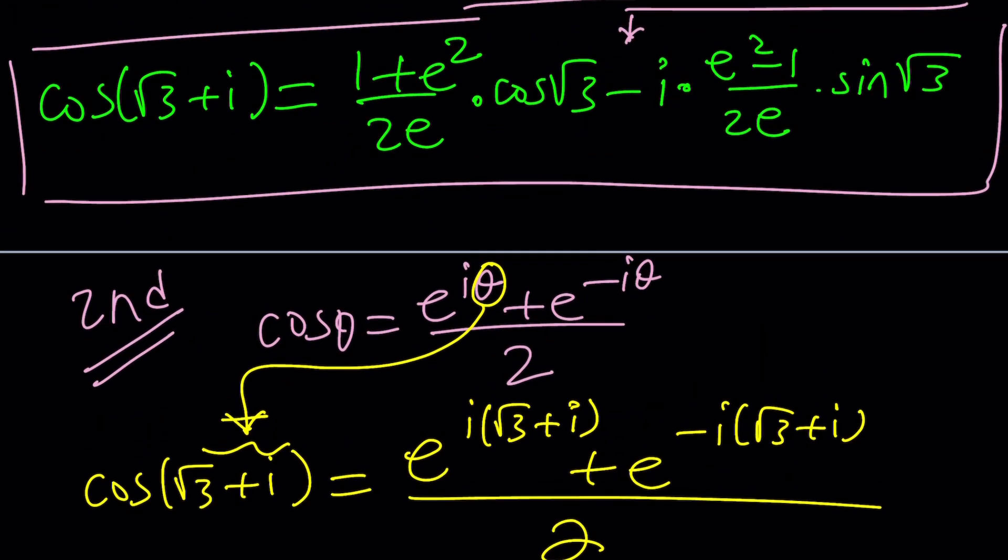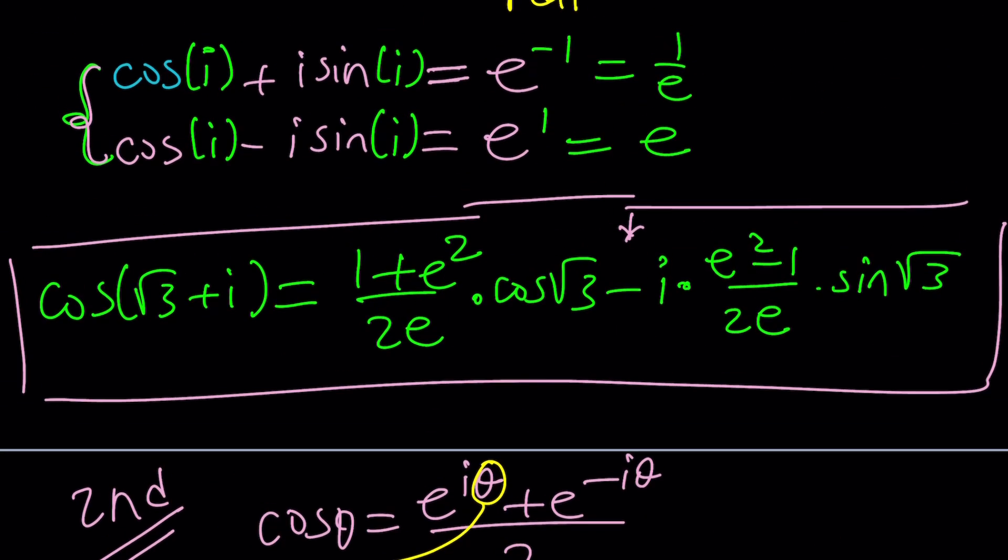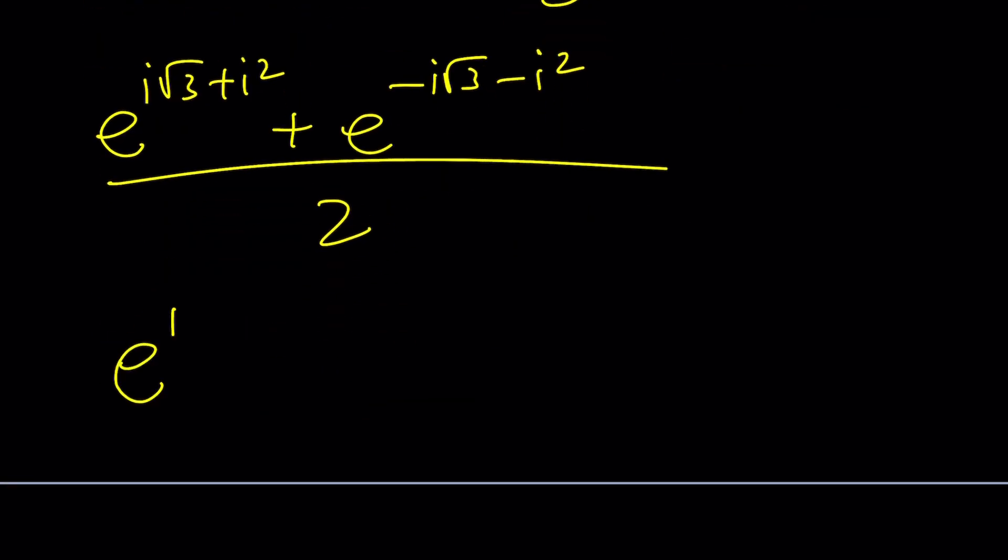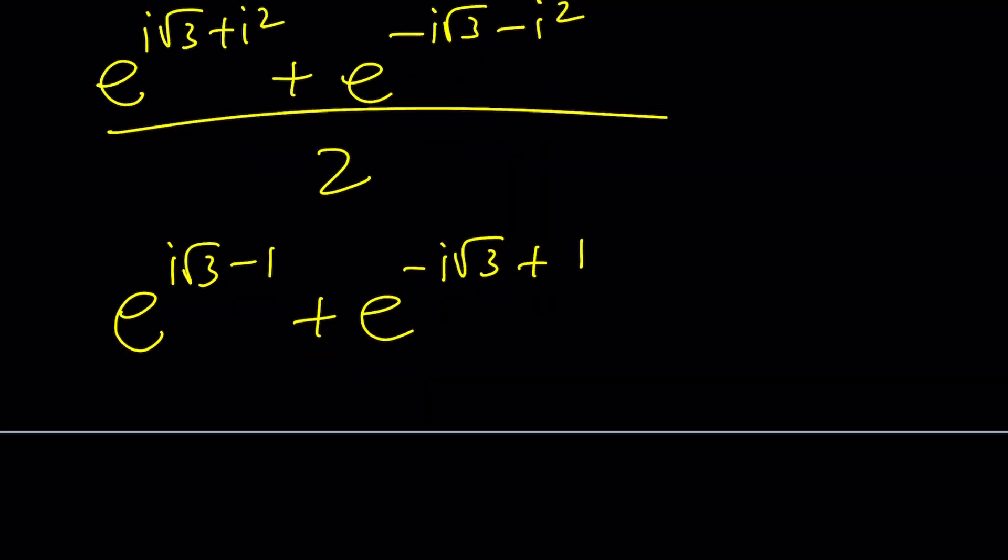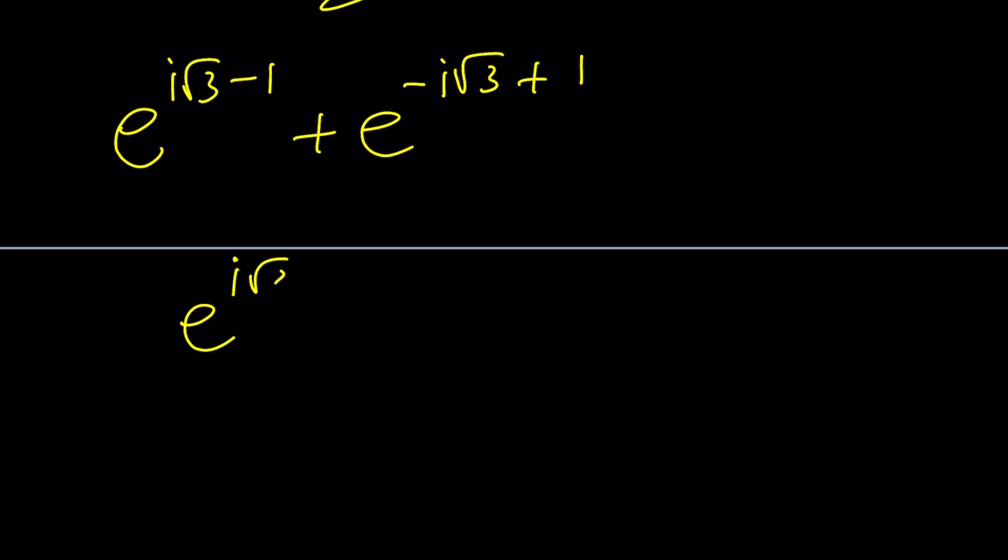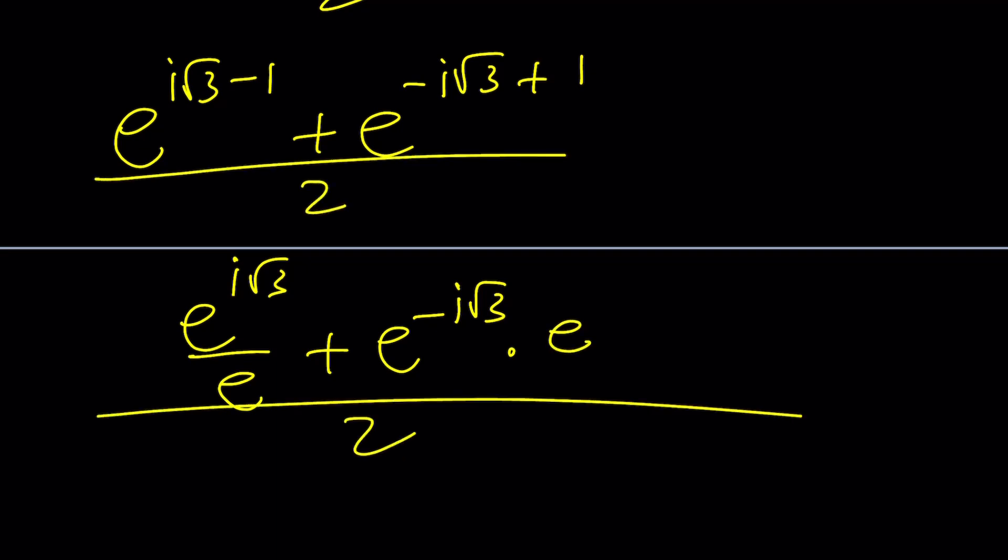e to the power i times root 3 plus i. Remember this is our angle. This time I'm treating it as a quantity, not like the sum of two angles but just a single quantity. And this sum is going to be divided by 2. Here's the interesting part. How does this turn into something like this? Well not really because if you distribute first you're going to get e to the power i root 3 plus i squared. And this is going to be e to the power negative i root 3 minus i squared. But notice that i squared is negative 1. So it's going to be e to the power i root 3 minus 1 plus e to the power negative i root 3 plus 1. And then because of the exponent rules you can go ahead and split this up into e to the i root 3 divided by e plus e to the power negative i root 3 times e, and all of that is divided by 2.